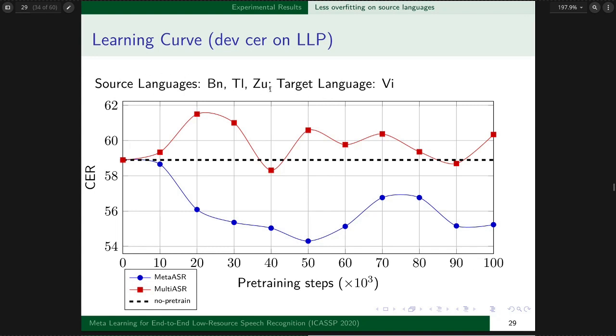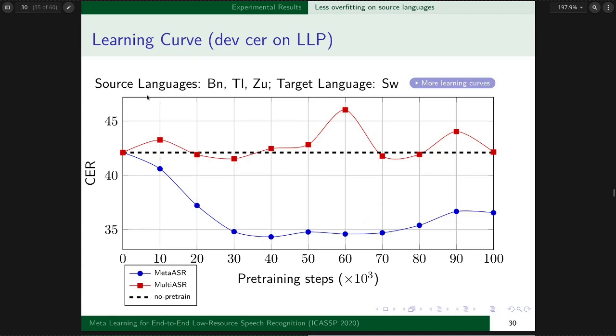Here is the source and target language pair and its corresponding learning curve. As pre-training grows, the learning curve of meta-ASR pre-trained initialization performs better and error rate trends down. This means meta-ASR pre-trained initialization is less overfitted on source languages. We observe similar trends on all source and target language pairs we conducted, but I just listed two.